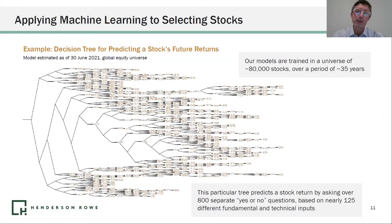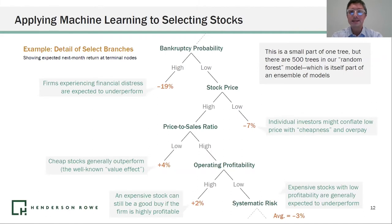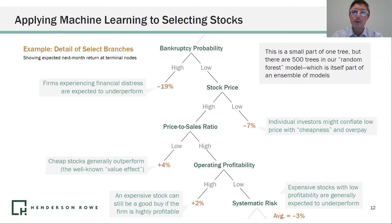Zooming in just so you can see what this process looks like, I've selected a few branches here to show you how a stock would flow through this model. This is not the top of the tree — we've already worked ourselves down to this stage. And we ask of a stock, given all that we know about it already, what's the stock's bankruptcy probability?